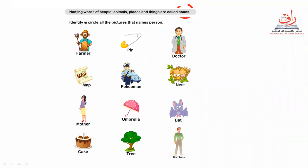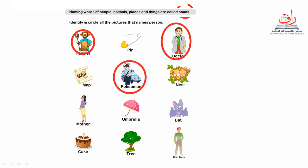Let's go to this picture: identify and circle all the pictures that name a person. Where is the person? Farmer — yes, person. Pen — no, pen is a thing. Doctor — yes, person. Map — no, thing. Policeman — yes, person. Nest — thing. Mother — yes, person.